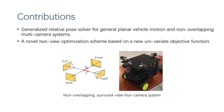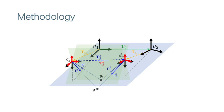Our contributions are as follows. We present the first generalized relative pose solver for general planar vehicle motion and non-overlapping multi-camera systems. We also present a novel two-wheel optimization scheme based on a new univariate objective function.